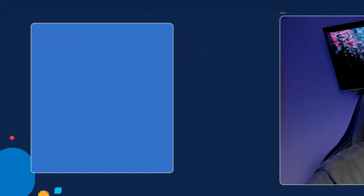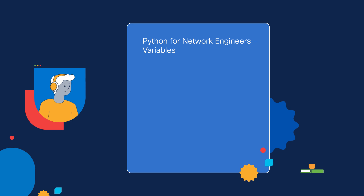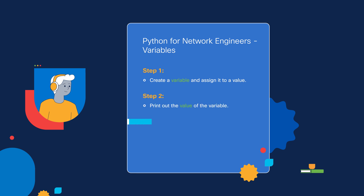First up are variables. I'm going to show you what variables are in three simple steps. Step number one, we're going to create a variable and assign it to a value. Step number two, we'll then print out the value of the variable. Step number three, we'll then look at how variables are used in real world network automation scripts.